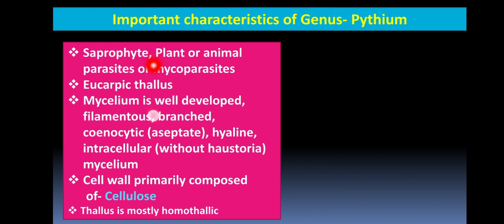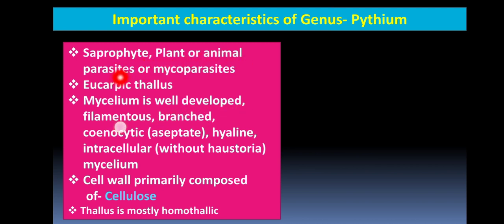Pythium is a saprophyte, meaning it can grow on dead and decaying organisms. Some species are also plant and animal parasites, meaning they can infect plants and animals. Some are also mycoparasites — myco meaning fungus — meaning they depend on living fungi for their nutrition.